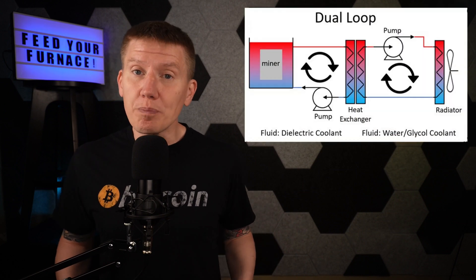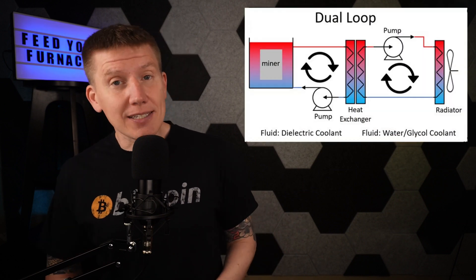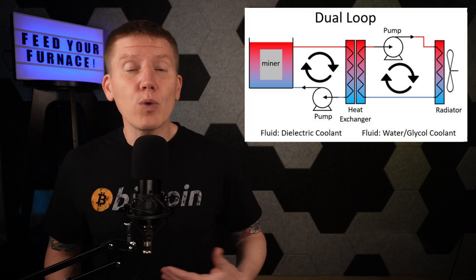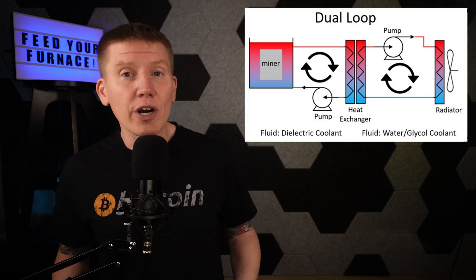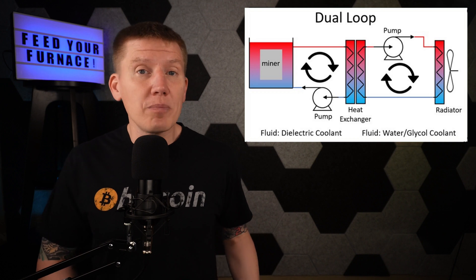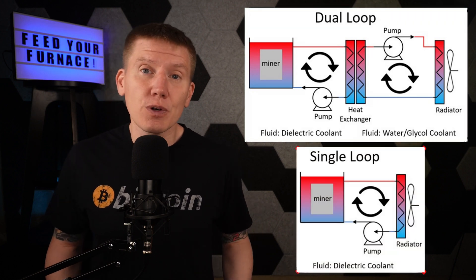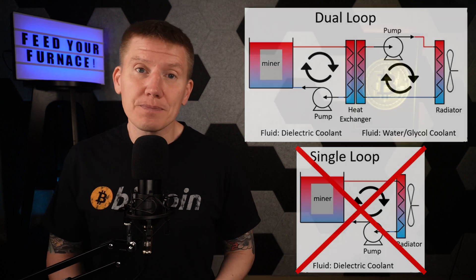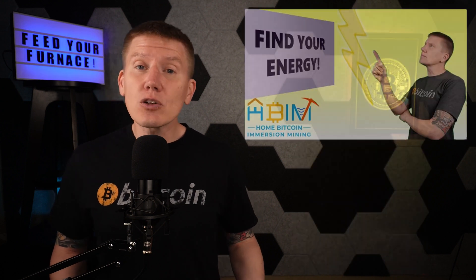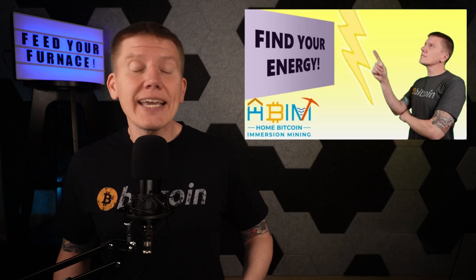I've put a few links below with more information. Before getting into the design, I want to note that all of this is only going to work well with a dual-loop Bitcoin mining system. Most all of the pumps, radiators, valves, and other hardware are made for glycol water mixtures, so a single-loop system circulating dielectric fluid will likely cause some problems. I covered single-loop versus dual-loop systems in a previous video if you want to know more.